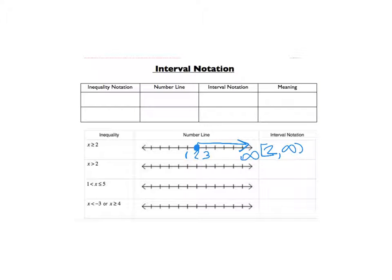Okay, for the next one, we're going to do an open circle on 2. It's also greater than, so we shade to the right. So it's parenthesis 2, comma, infinity, parenthesis.